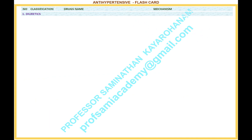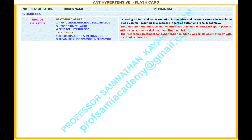Number 1: Diuretics. Classification 1.1: Thiazide Diuretics. Benzathiadiazines include: 1. Hydrochlorothiazide, 2. Benzthiazide, 3. Hydroflumethiazide, 4. Bendroflumethiazide. Thiazide-like drugs include: 1. Chlorthalidone, 2. Metolazone, 3. Xipamide, 4. Indapamide, 5. Clopamide.